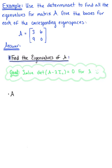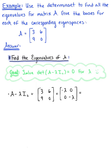The first thing we need is to find matrix A minus lambda times the 2 by 2 identity. So we have matrix A as 3, 9, 6, 0, and we are adding the matrix negative lambda, 0, 0, negative lambda. Combining those like terms, we get the resulting 2 by 2 matrix: 3 minus lambda, 9, 6, negative lambda.